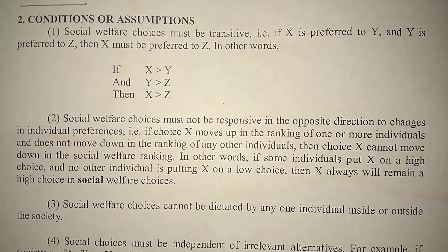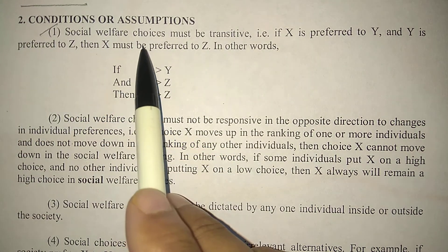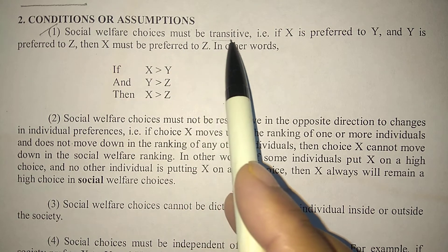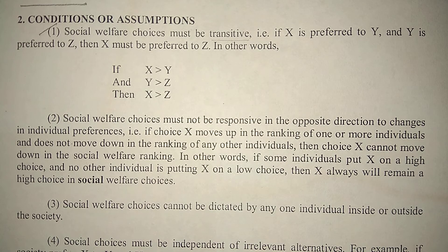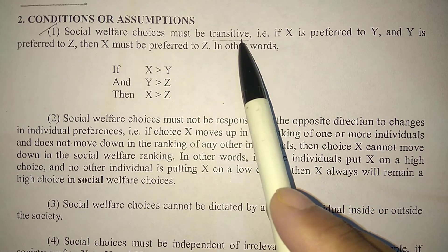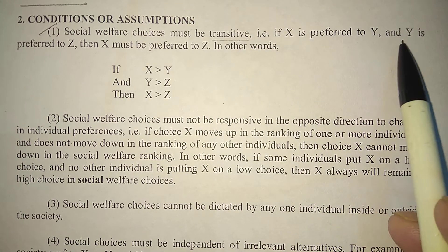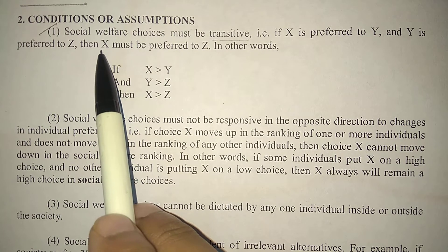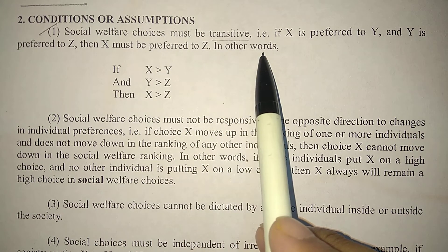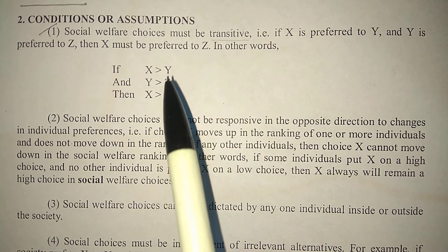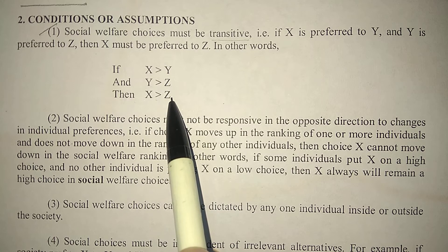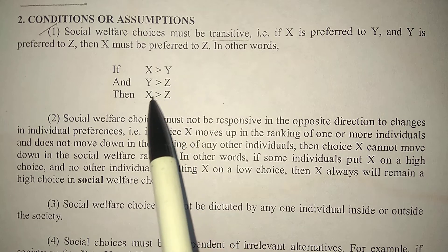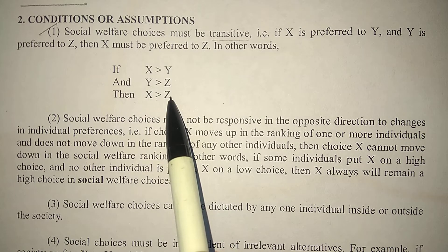There are four conditions. First, social welfare choices must be transitive. Transitivity is an assumption we also explained in the indifference curve chapter. Its meaning is: if X is preferred to Y and Y is preferred to Z, then X must be preferred to Z. Mathematically, if X > Y and Y > Z, it means X > Z.